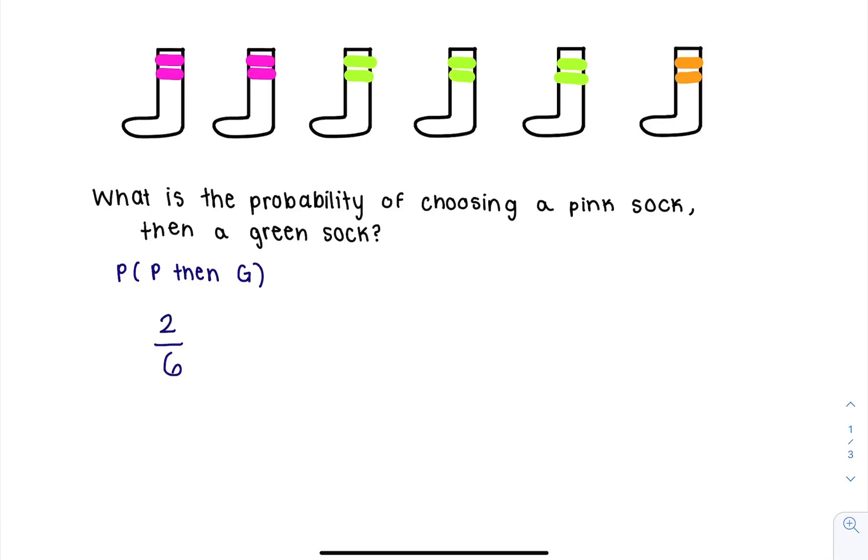Then let's say I got rid of this pink sock and I'm not going to replace it in my drawer. Now I want to pull out a green sock. So now the probability of drawing a green sock isn't three out of six, it's actually only three out of five.